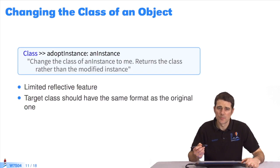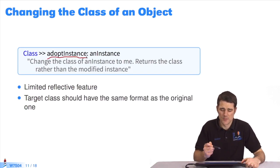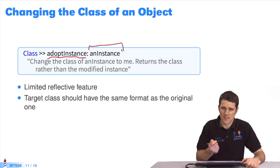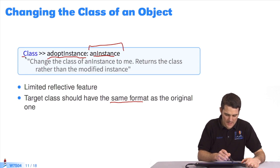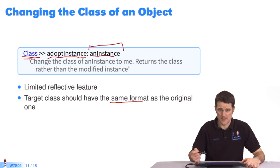Another reflective primitive is AdoptInstance. This changes an object's class. We ask a class to adopt a new instance, passed as a parameter. Changing a class is a very powerful but rather limited tool. It's essential that the object's original class, in this case an instance, is compatible with the format of the target class. You can't just swap any object. Sometimes it's indexed, etc. The format of an object is very important.